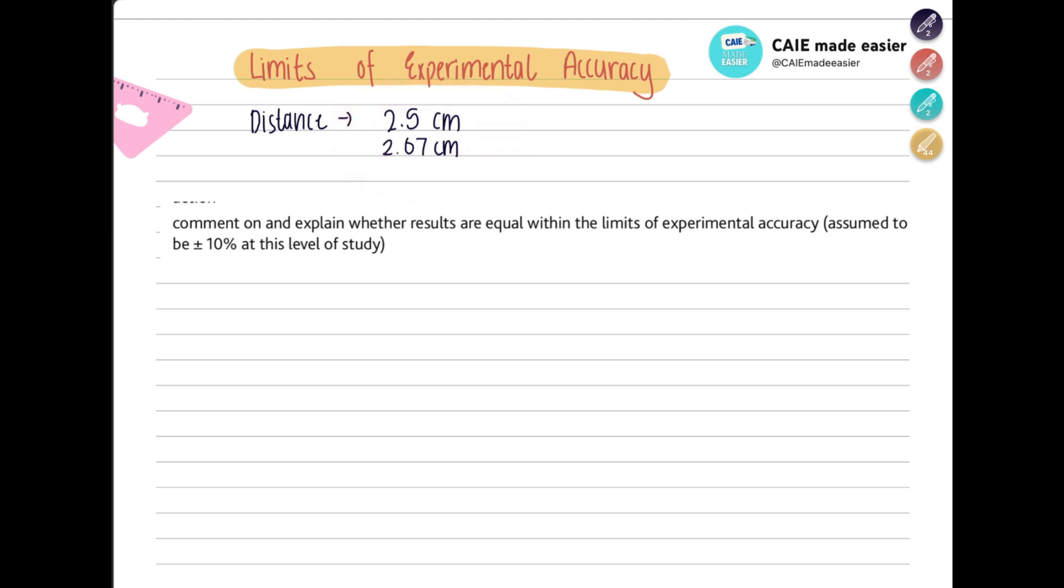Now according to the marking scheme, two values are equal within the limits of experimental accuracy if they are within 10 percent of each other.